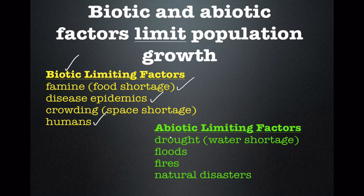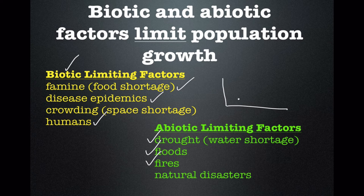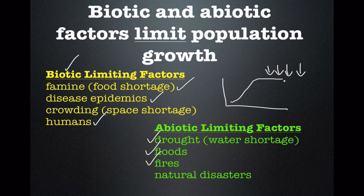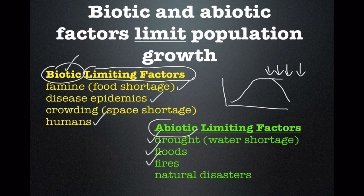Abiotic factors are non-living things that might limit a population's growth — water shortages, natural disasters like floods and fires. When a population is growing, it will keep growing until something limits it. This limiting force pushes down on the growth curve and either makes it level off or causes it to crash. These things that keep the curve from going up infinitely are called limiting factors, and they can be biotic or abiotic.